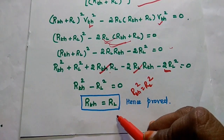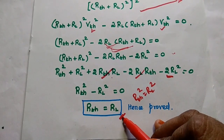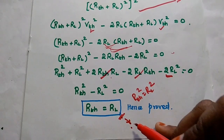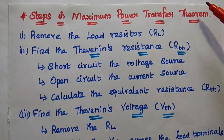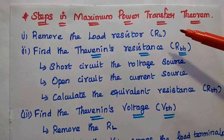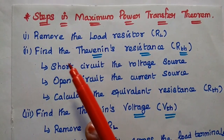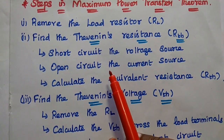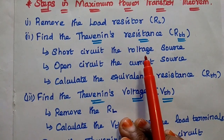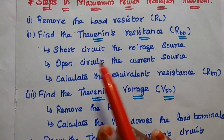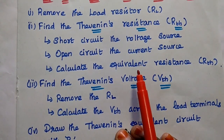Taking the square root gives RTH = RL. Hence the maximum power transfer theorem is proved. With this condition we can transfer the maximum power from the source to the load. Next we discuss the steps used in this maximum power transfer theorem. If any electric circuit is given and we are asked to find the load resistor, the first step is to remove the load resistor from the given circuit. Then find the Thevenin's resistance: short circuit any voltage source, open circuit any current source, and calculate the equivalent resistance.